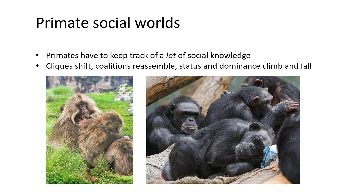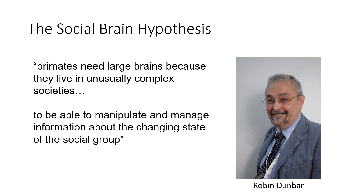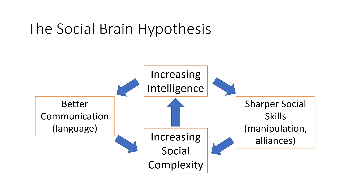Primates, being a social species for the most part, have to keep track of a lot of social knowledge. Cliques shift, coalitions reassemble, and status and dominance climb and fall. So there are a lot of complex social relationships that have to be kept track of, especially in large social groups. Taking all of this together, Robin Dunbar suggested the social brain hypothesis. He proposes that primates need large brains because they live in unusually complex societies, and that we need to be able to manipulate and manage information about the changing state of the social group.